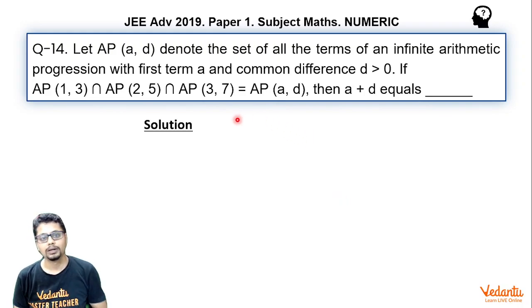So essentially there are three sets which are respectively APs with respective first terms and common differences, intersection of which will also turn out to be an AP with common difference D and first term A. So we are looking for A and D.